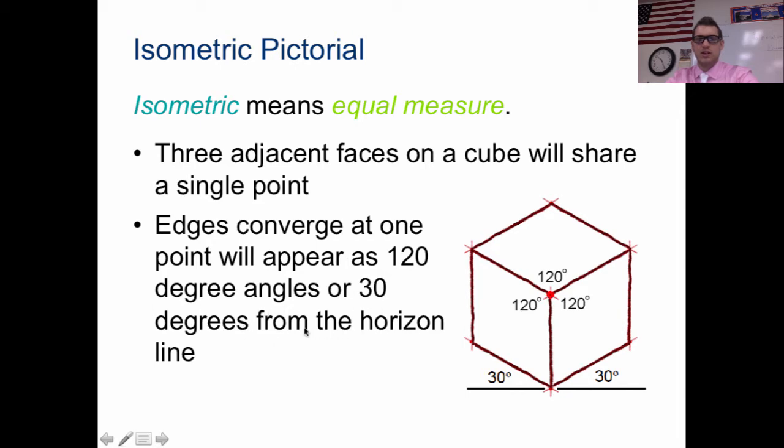While the other one from the horizon is 30. So here's the horizon down here. We're going to have 30 degrees from here, 30 degrees from here. And this gives us an isometric view of this one cube.